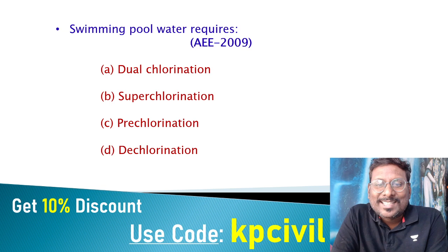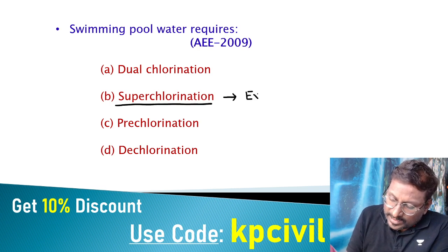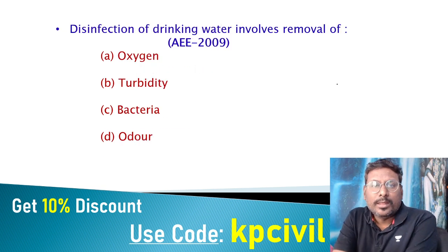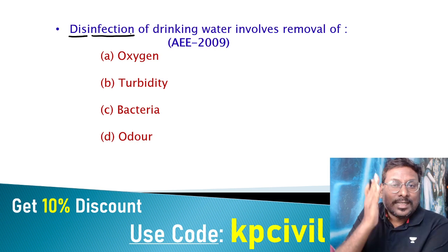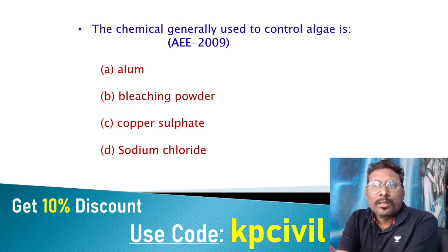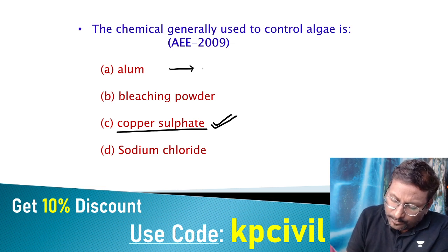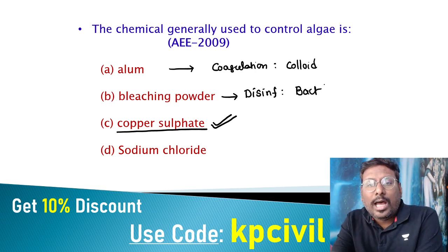Swimming pool water always requires excess chlorine dosage, so super chlorination is used. Disinfection of drinking water involves removal of disease-causing microbes — bacteria. Dis-infection means removal of infection, i.e., disease-causing microbes. For algae control, copper sulfate is used. Alum is used during coagulation for colloids; bleaching powder during disinfection for bacteria. Algae are removed by copper sulfate.